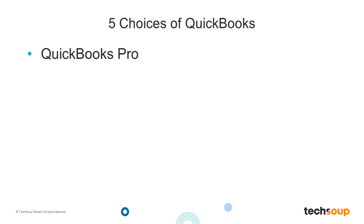The first option is QuickBooks Pro — the basic QuickBooks you can purchase at Costco or Sam's Club, retailing around $275 but available in stores for around $180. If you have Pro, you can do your QuickBooks for your nonprofit — you don't need the nonprofit edition. Don't let anybody tell you that you have to get the nonprofit edition; QuickBooks Pro is fine.